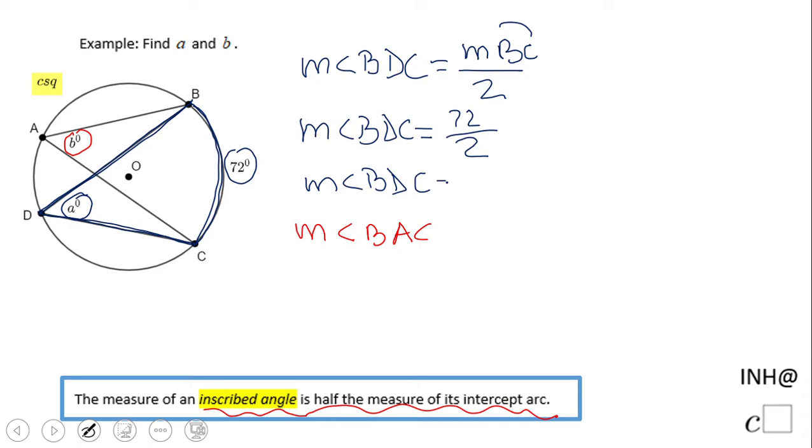Similarly, we're going to do the same steps for BAC. If you take a look, BAC is an inscribed angle with the same intercepted arc, so it's going to be half of BC. We end up with the same steps.